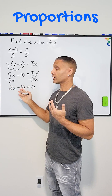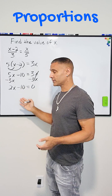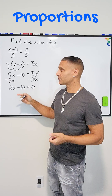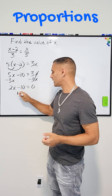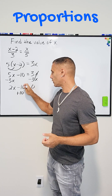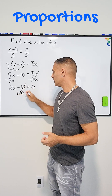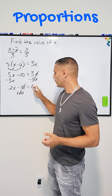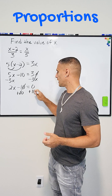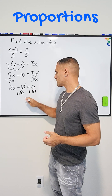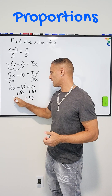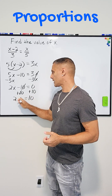Now we're going to take our constant and move it to the other side, and the opposite of subtracting 10 is adding 10. That turns it into zero on this side, and on this side we now have zero plus 10, which is equal to 10, and then we just slide down our 2 times x.